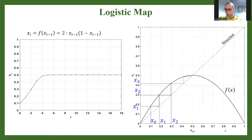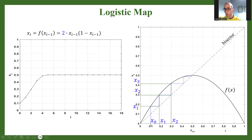Here is the cobweb diagram. In the cobweb, we don't discard the transient behavior — we plot the transient as well. We start from x0 = 0.1. From x0, following the curve, we find x1. Then we find x1 in the bisector and plot a vertical line, so x1 is mapped to x2. Then we go again into the bisector — so x2, by plotting a vertical line to find where it intersects f, gives us x3.